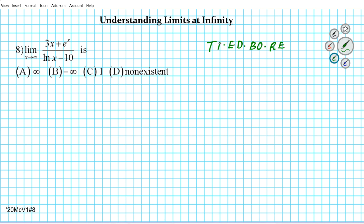Basically, with TYBO: top-heavy gives plus or minus infinity, bottom-heavy gives zero. When you have exponential functions or logarithmic functions, as is the case here, you use relative rates. We're going to be using relative rates to help us solve this problem.